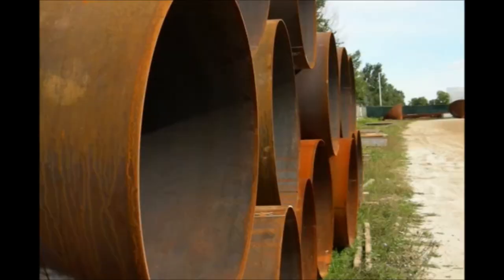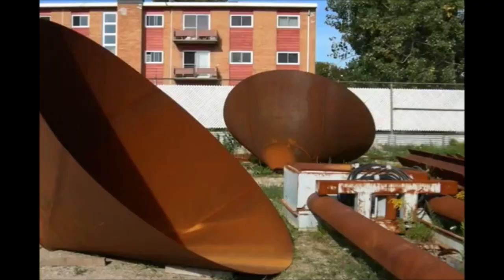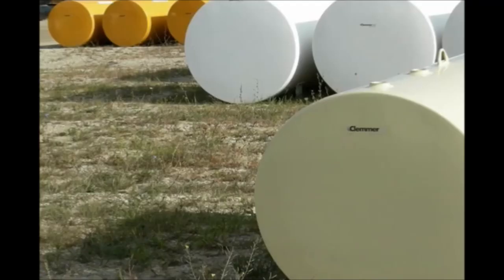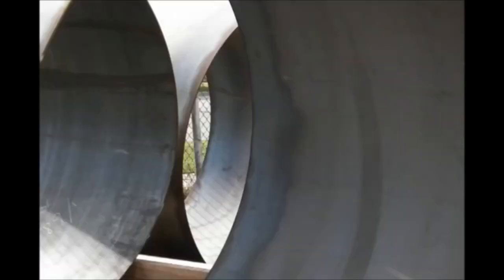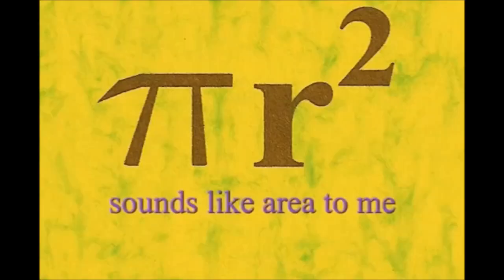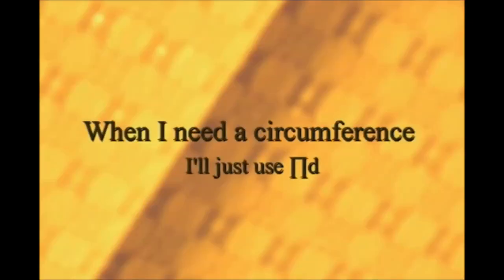Here is a circle, it knows how to get around. It has a radius from center to rim. And its diameter's a line that goes from side to side while passing through the center, now isn't that simple. Pi r squared sounds like area to me, when I need a circumference, I'll just use pi d.